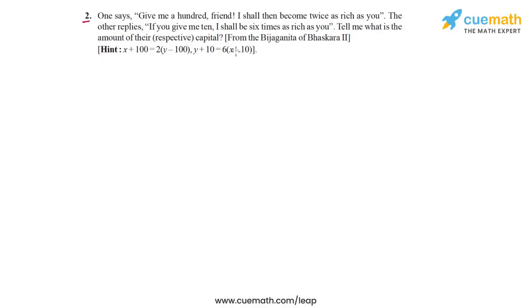Question 2 of this exercise is from an ancient mathematical text called Bija Ganita written by Bhaskar II, a mathematician from medieval India. He lived in the 12th century AD and was one of the most prominent mathematicians of that time.